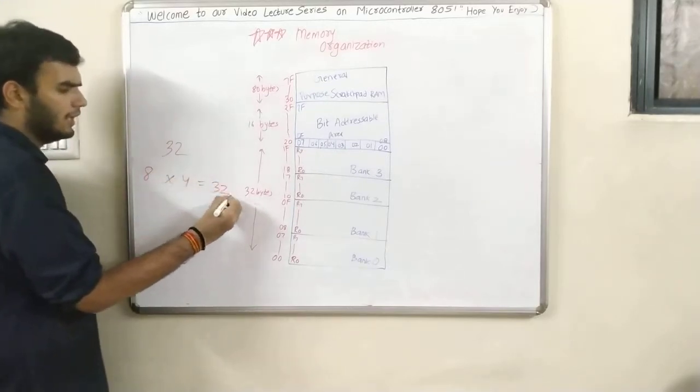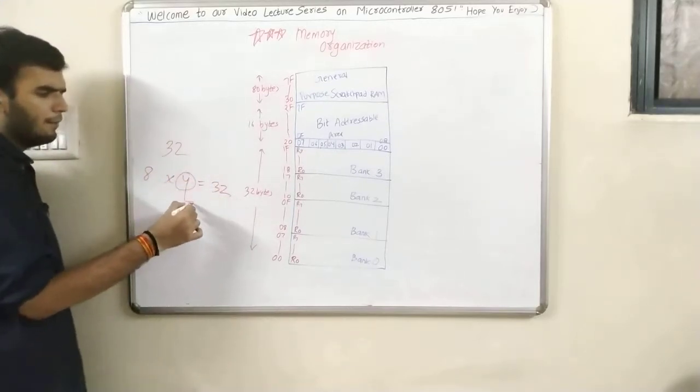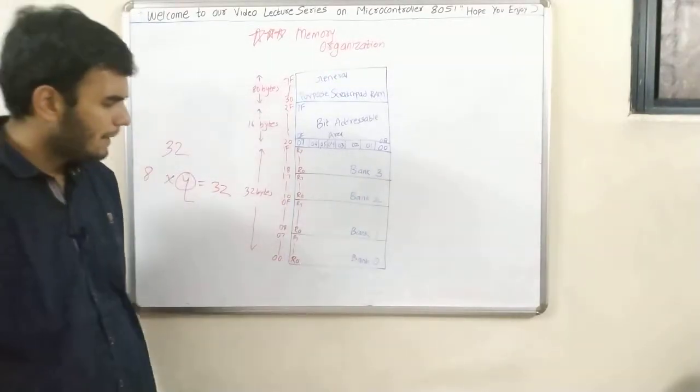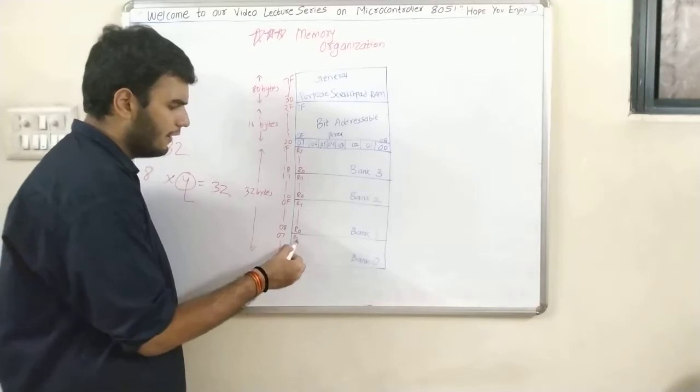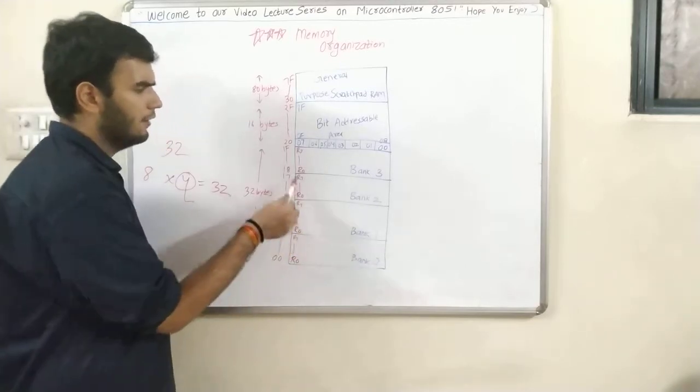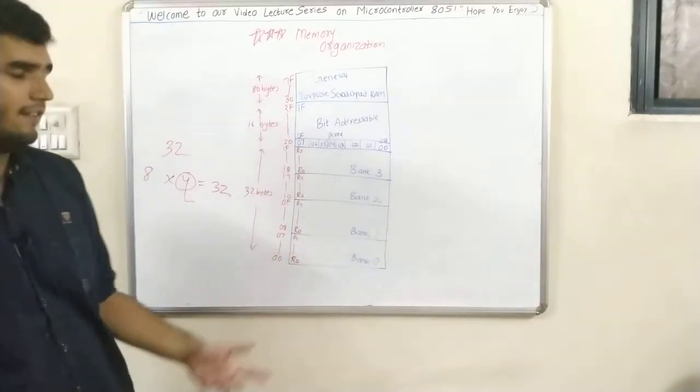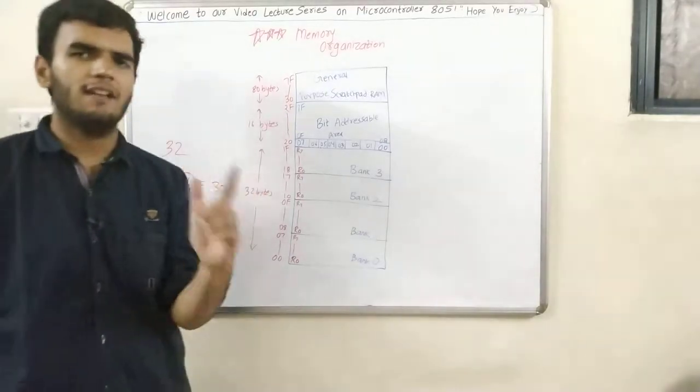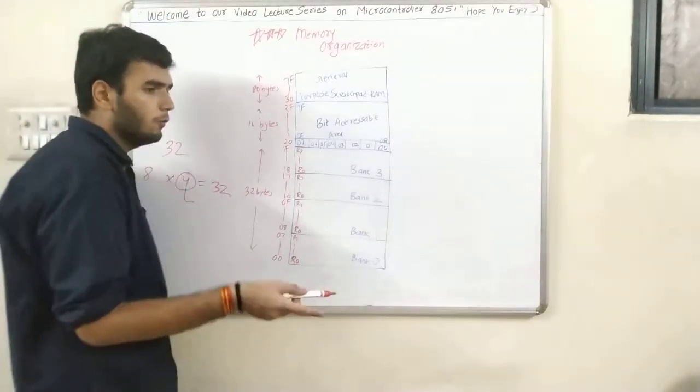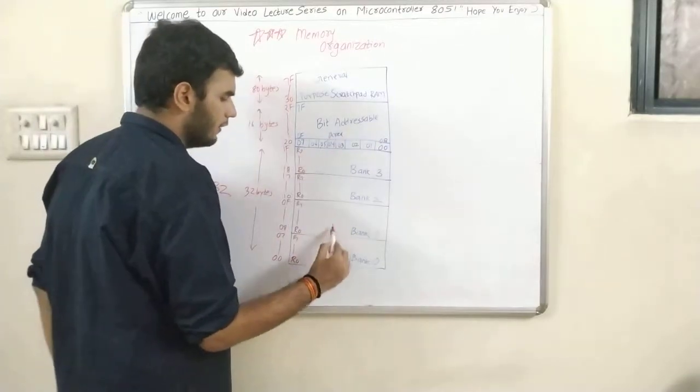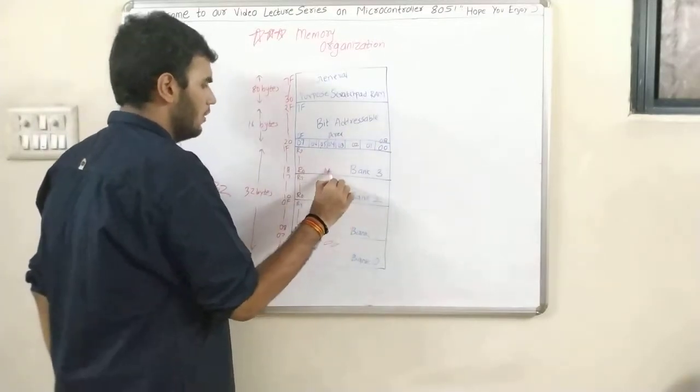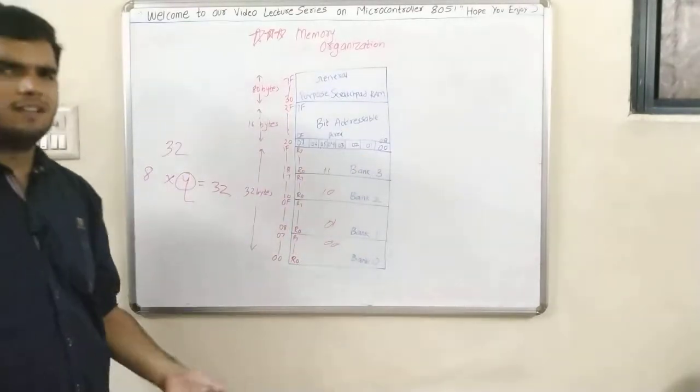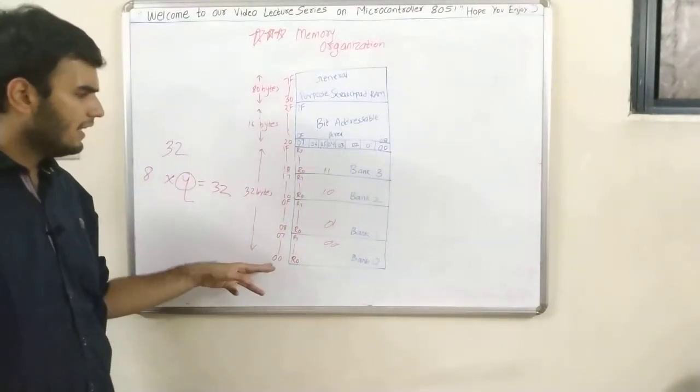These 32 registers, as I discussed in the PSW lecture, are divided into groups of 8, having 4 banks, which means 32. These 4 are basically bank 0, bank 1, bank 2, bank 3, and each bank has 8 registers. You can see R0 to R7 for each bank. At a single time, only one of each bank is activated by the code which we entered in the PSW.